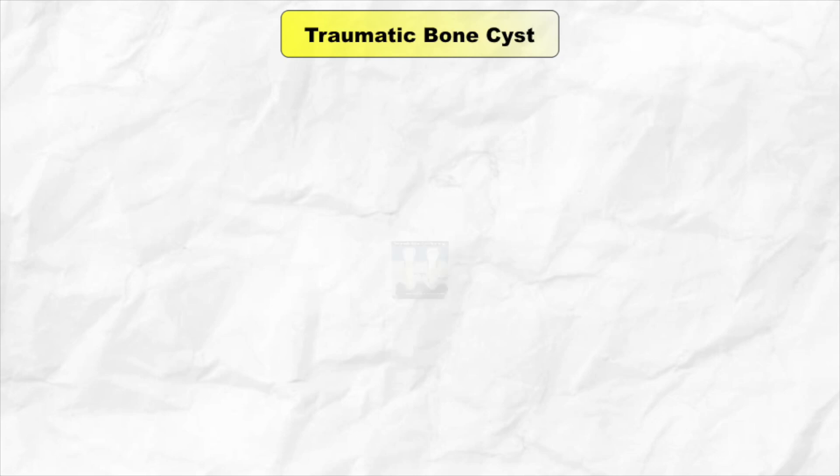One more point about traumatic bone cyst: the radiolucent lesion shows a dome-like projection which protrudes between the roots of adjacent teeth. This is highly suggestive of traumatic bone cyst.